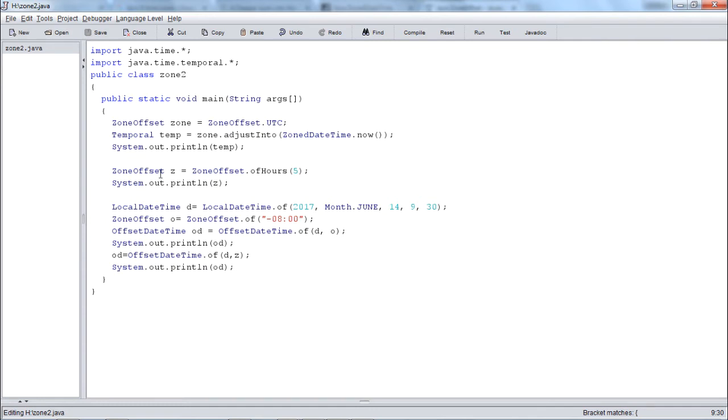Secondly, I create two objects of zone offset Z and O. In order to create Z object, I call the method zone offset dot of hours 5, so offset of 5 hours will be created. If I print it out, it will print the offset value. Similarly, I create an object O of the zone offset class by calling the dot off method and giving the string representation of the offset that I want, giving it as minus 8.00, that means negative 8 hours.